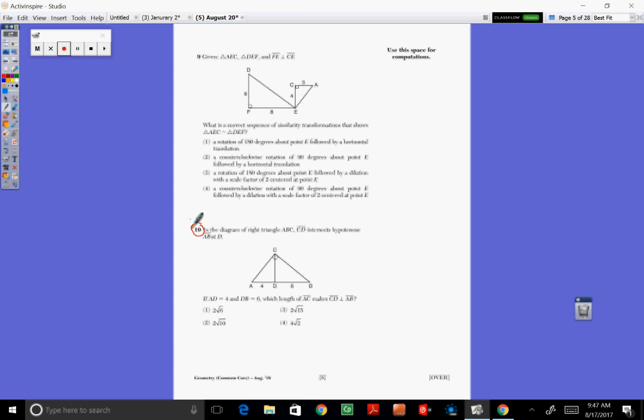So the diagram of right triangle ABC - you can see C is the right angle. CD intersects the hypotenuse. AD is 4, it's marked. DB is 6, it's marked. The length of AC, we'll call that X, makes it perpendicular.